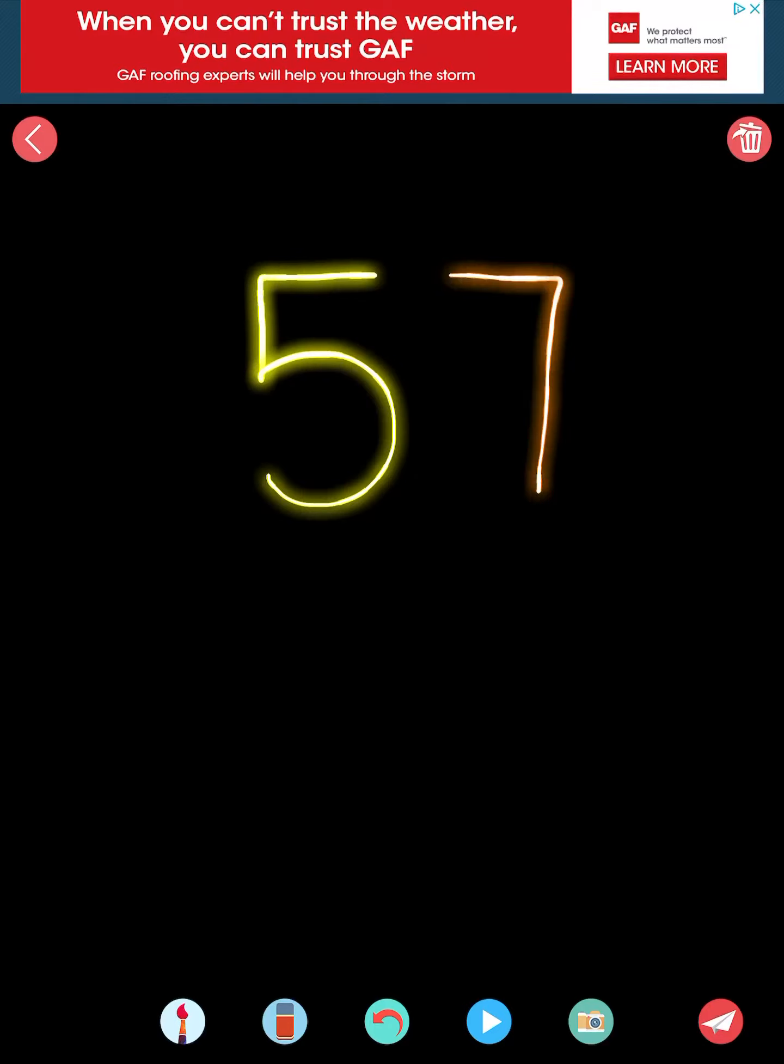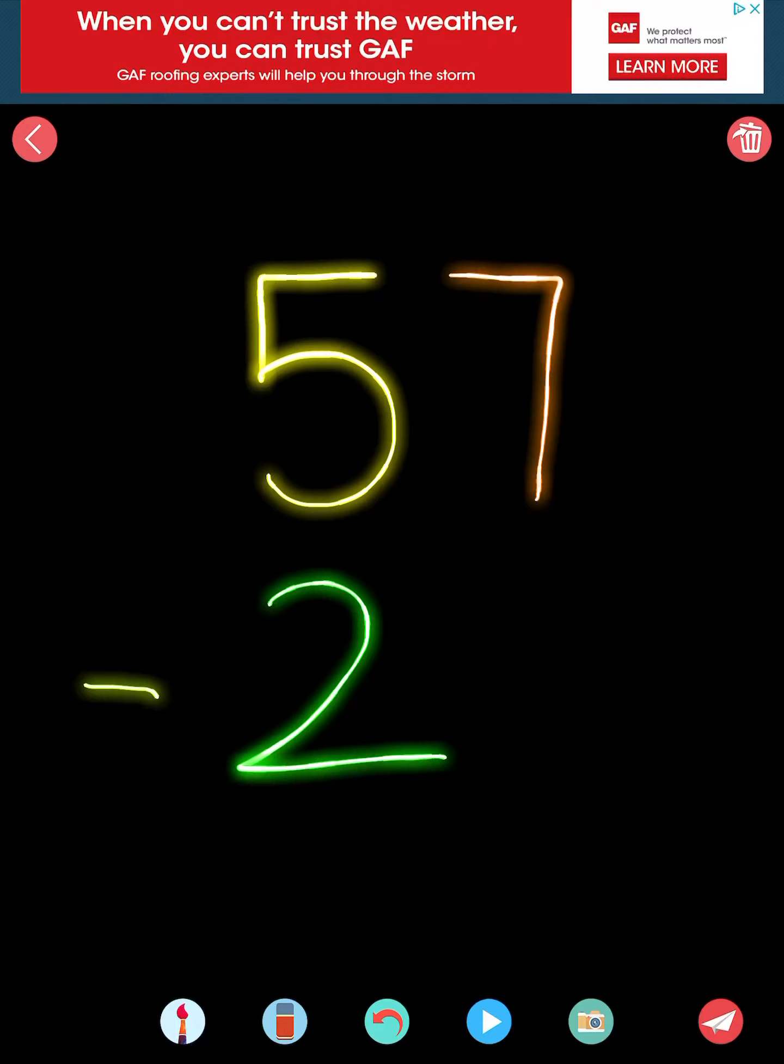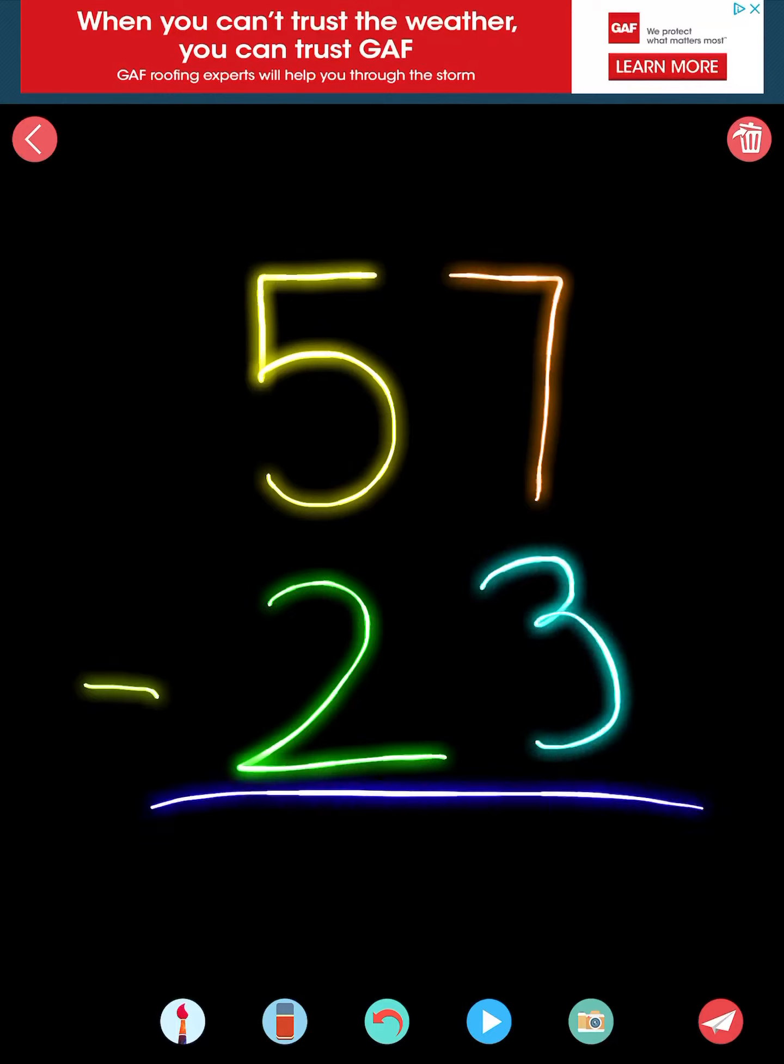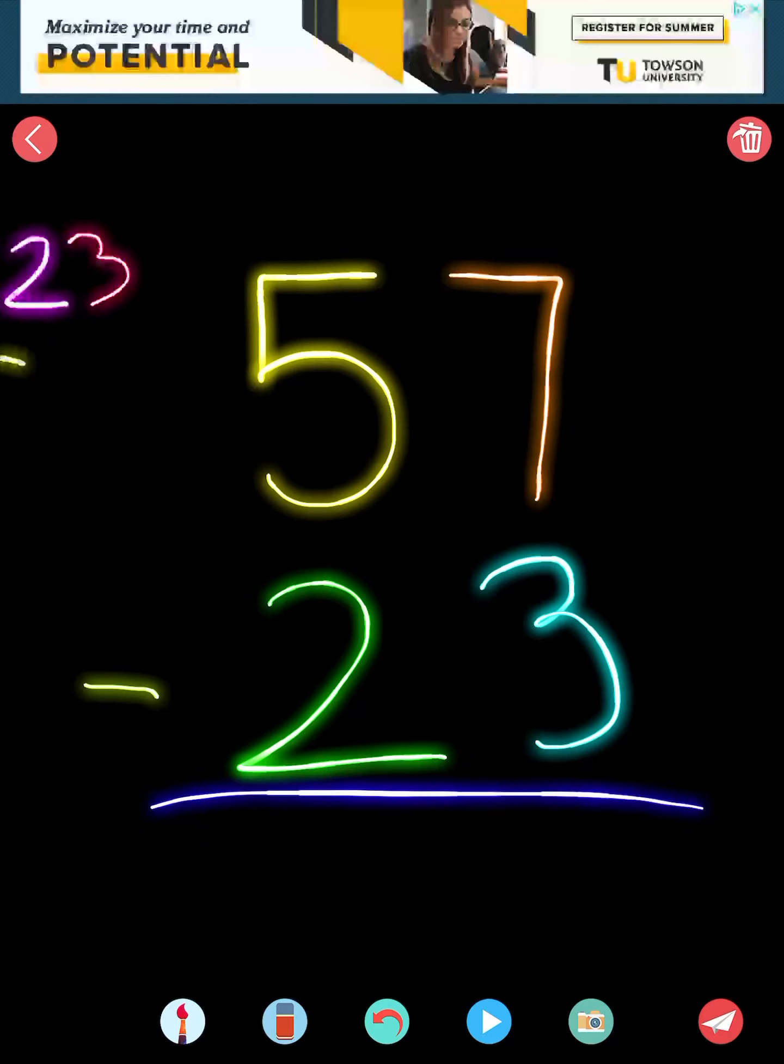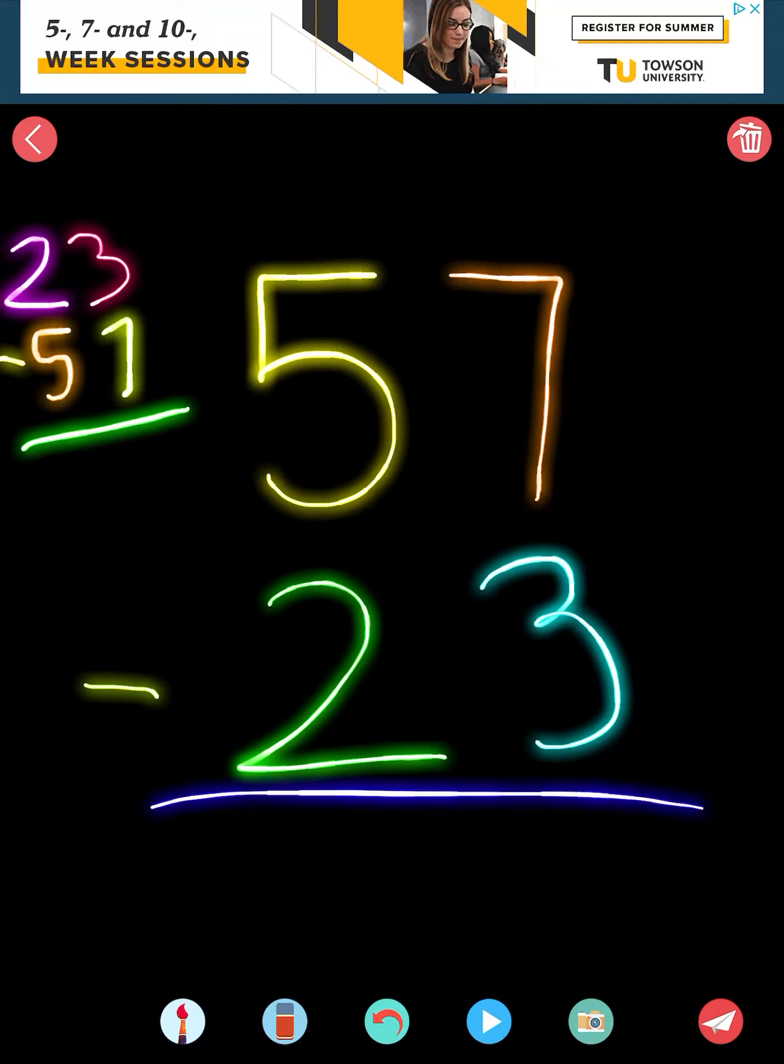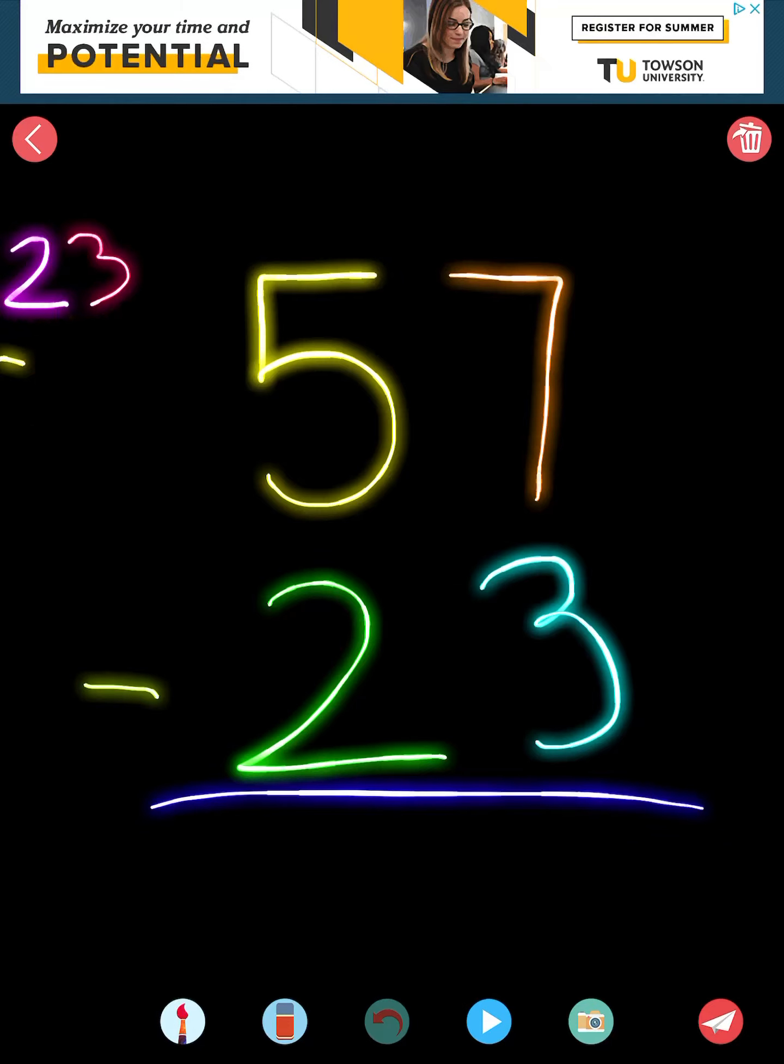So in subtraction, we know the biggest number goes first or on top. So 57 minus 23. If I had it reversed and I did 23 minus 57, I wouldn't be able to take 57 away from 23 because I wouldn't have enough. So that's why the biggest number goes on top. So 57 minus 23.